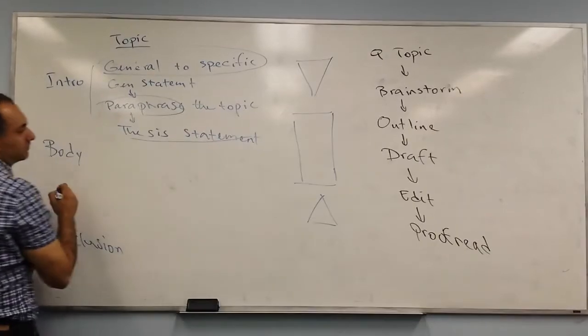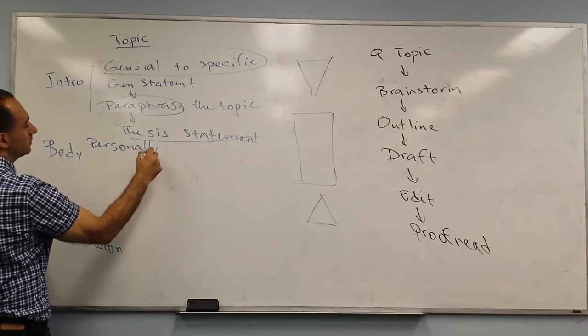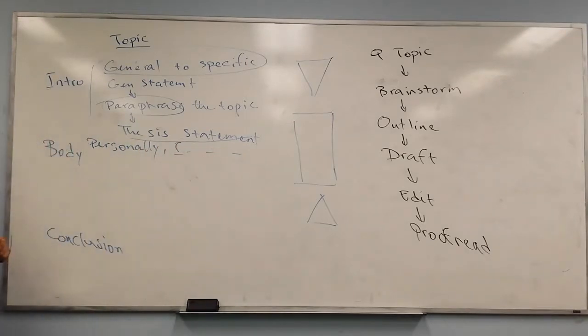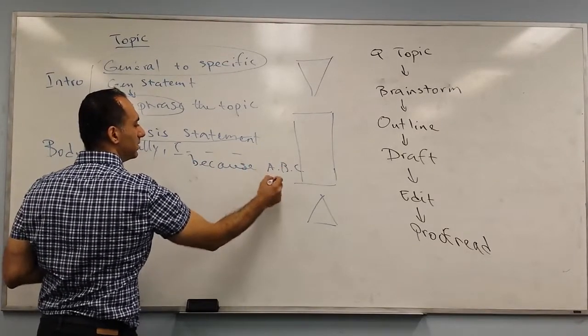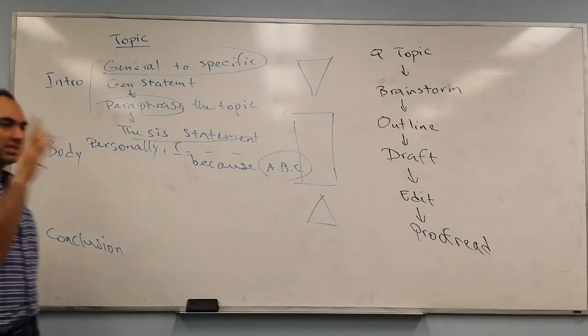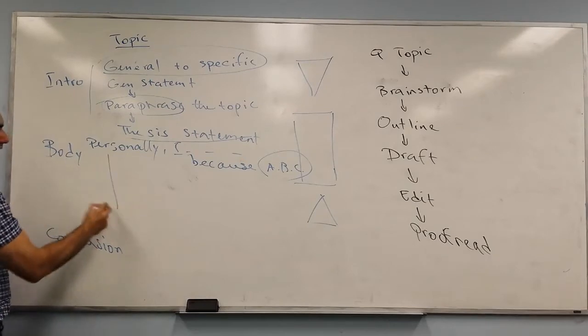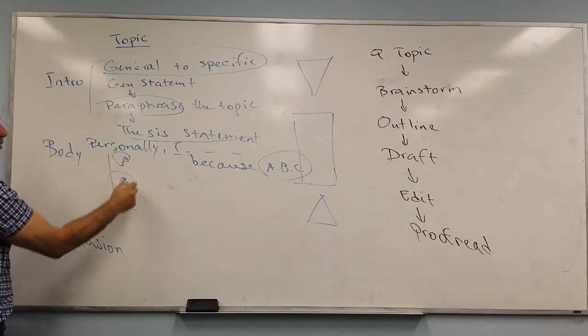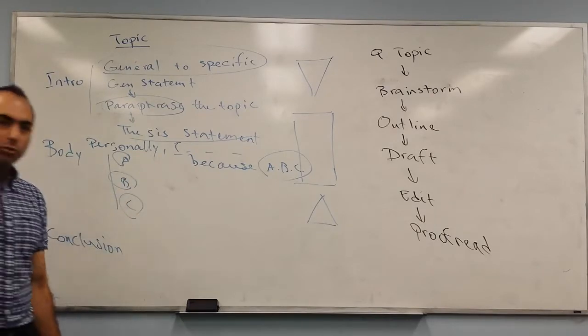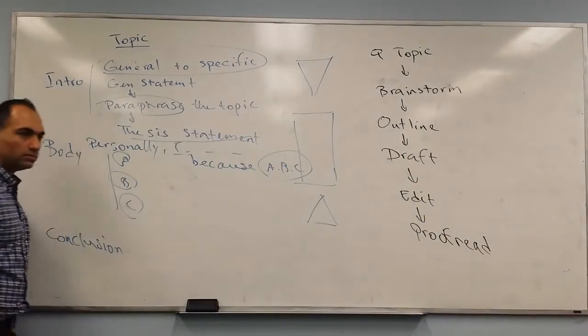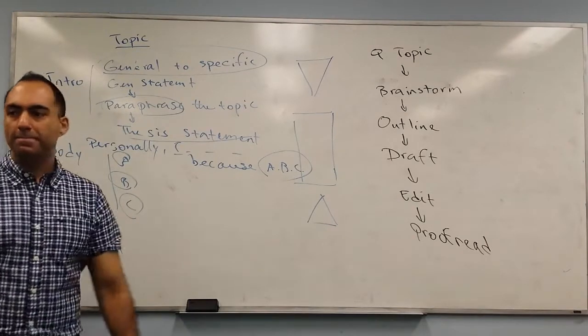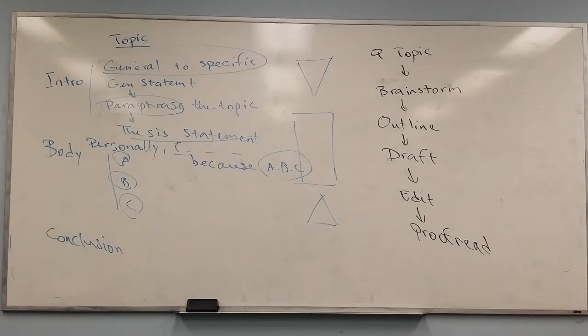So thesis statement: I prefer to go to college because A, B, and C. If I give three reasons, I need three paragraphs. If I give two reasons, I need two paragraphs in the body. So if I give reasons 1, 2, and 3, it needs three paragraphs, and then there's a conclusion.